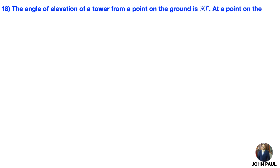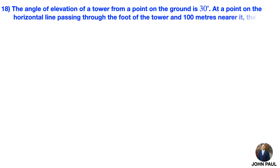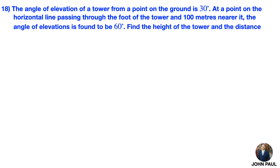Next problem. The angle of elevation of a tower from a point on the ground is 30 degrees. At a point on the horizontal line passing through the foot of the tower and 100 meters nearer to it, the angle of elevation is found to be 60 degrees. Find the height of the tower and the distance of the first point from the tower.